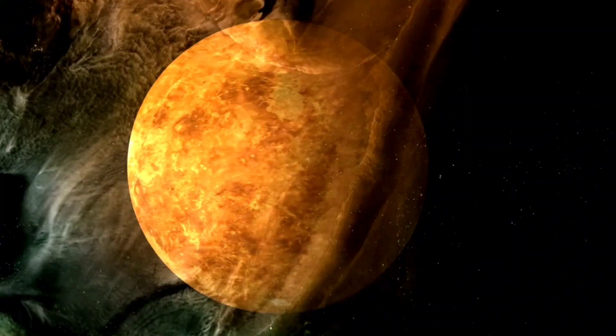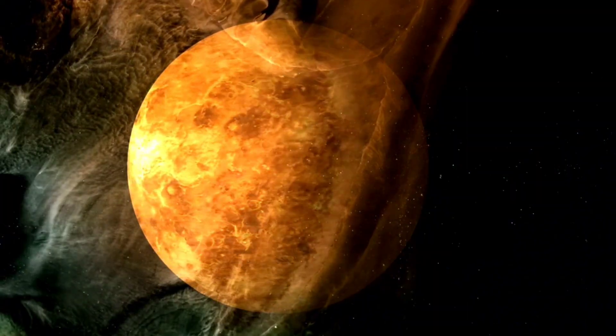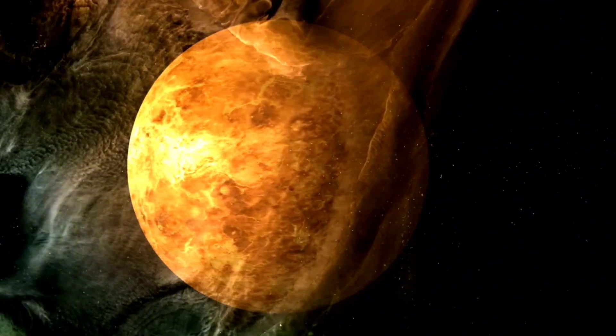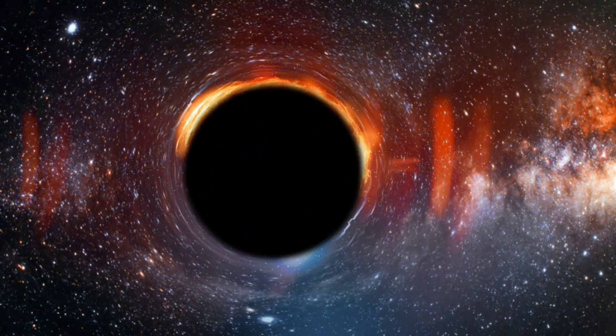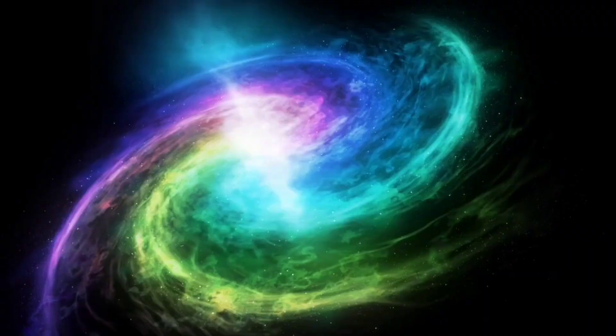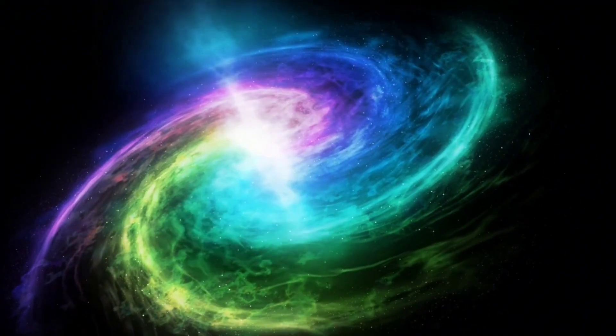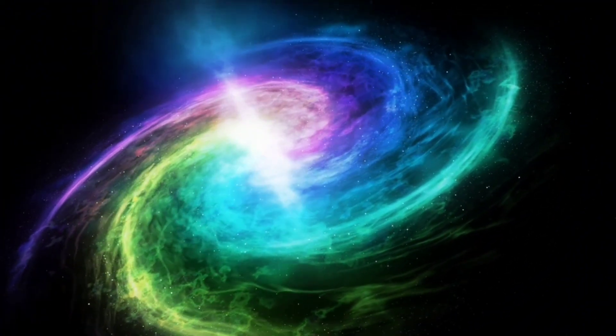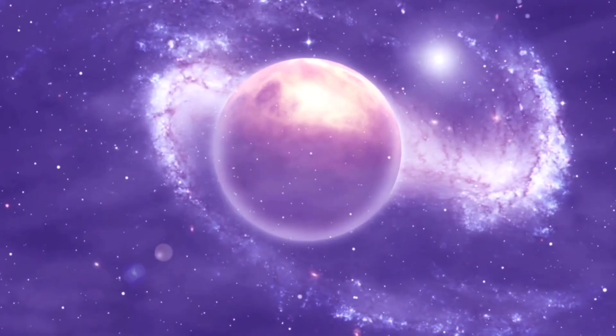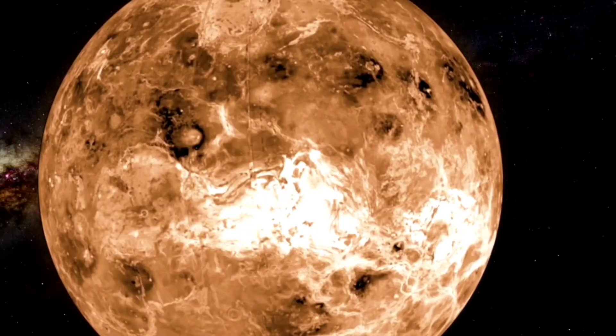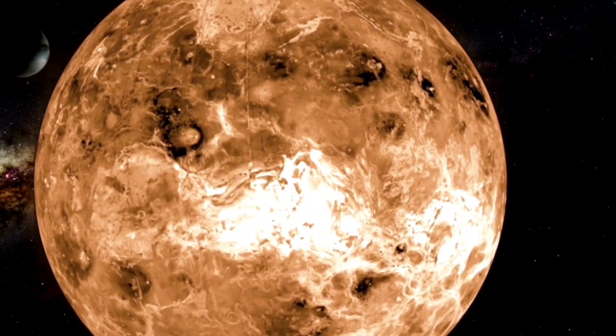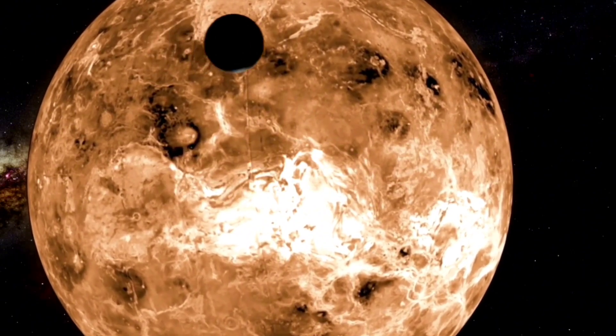As scientists continue to study Betelgeuse, they are uncovering more about the life cycle of massive stars and the processes that lead to their explosive endings. Understanding these cosmic phenomena is crucial for gaining insights into the evolution of our galaxy and the formation of elements. During a supernova explosion, not only is light emitted, but a vast array of heavy elements like gold, silver, and uranium are forged in the intense heat and pressure of the explosion. This process is known as nucleosynthesis and plays a vital role in enriching the interstellar medium with the building blocks necessary for future star and planet formation.